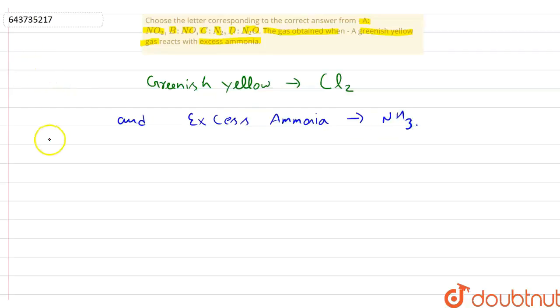So the reaction of chlorine gas with excess ammonia can be shown as Cl2 plus NH3 gives... So for balancing, here we can see that